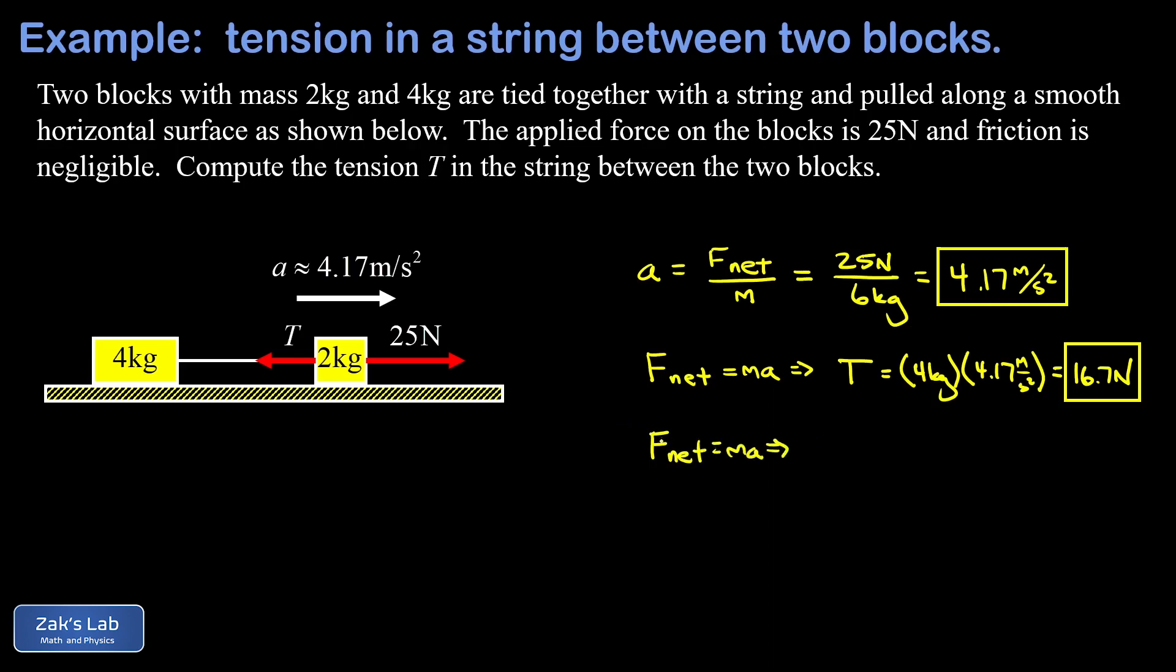But this time there's two forces acting in the x direction. We have 25 newtons pulling to the right, so 25 newtons, minus the tension acting to the left. So 25 minus T, that's our net force. And that's equal to m, this 2 kilogram mass, times our acceleration, 4.17 meters per second squared.